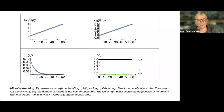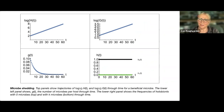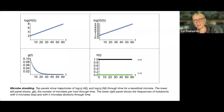This really complicates matters because we're used to using the criterion of invasion when rare as a condition for coexistence. Here we find that both can increase when rare, and yet one in effect doesn't coexist with the other. This problem recurs throughout all the subsequent analysis — whenever you use an increase-when-rare condition, it's a necessary condition for coexistence, but not sufficient.